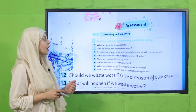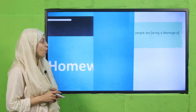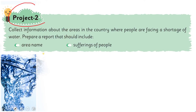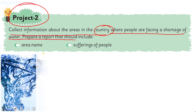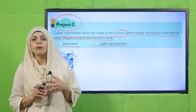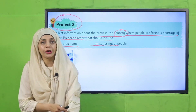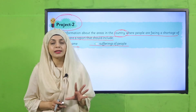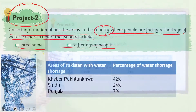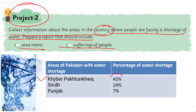Now note down your homework — Project number two, to be completed at home. Collect information about the areas in the country where people are facing a shortage of water and prepare a report that includes the area name and the sufferings of the people. With the help of the internet or your elders, find which areas of Pakistan have water shortage. Here are some facts: Khyber Pakhtunkhwa is at the top with 42% water shortage, then Sindh with 24%, and Punjab with 7%.